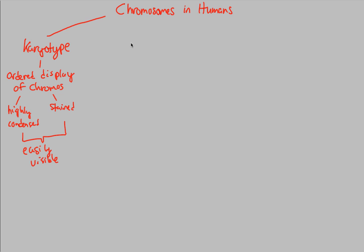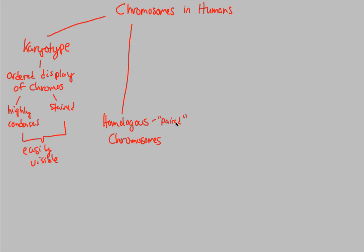Moving forward, we have to understand another important term that helps us understand what is going on at certain points of meiosis, and that term is homologous chromosomes. We've mentioned this briefly in our previous video on mitosis. Think of homologous chromosomes as just paired chromosomes — another way to describe them is that they are chromosomes that are always paired together. They're always with each other; they're homologous.